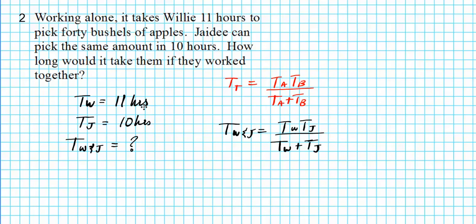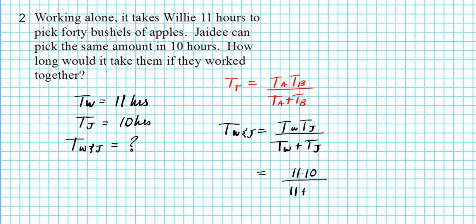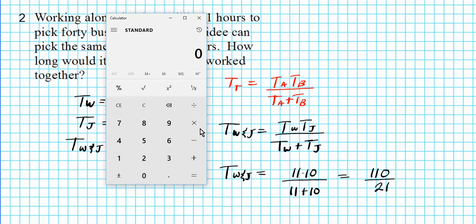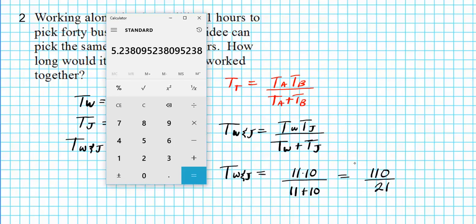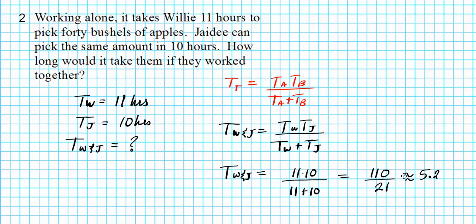Remember, you multiply the times and then divide by the sum of the times. So we're going to have 11 times 10 on the top, divided by 11 plus 10 on the bottom. So we have 110 divided by 21. That's the exact answer. Let's find the decimal approximation: 110 divided by 21 gives you 5.2381.